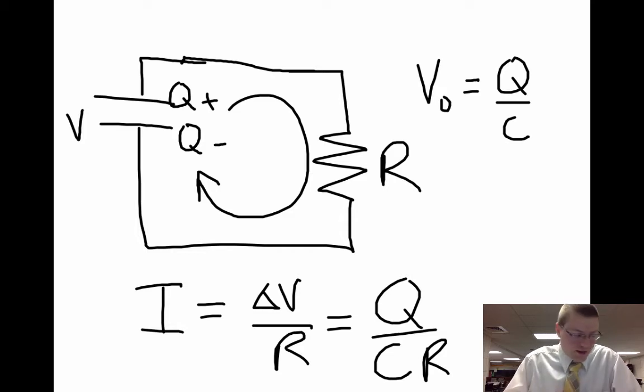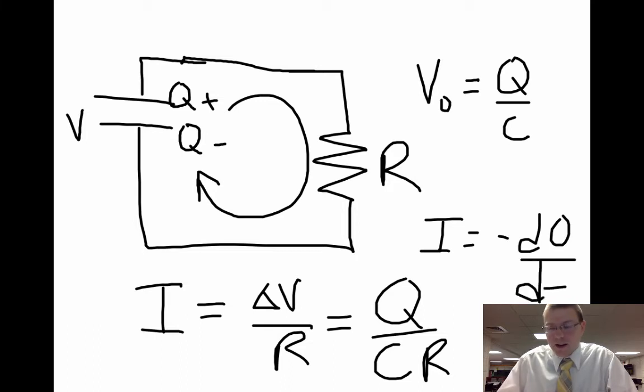However, the current is going to decrease as the voltage decreases, so the amount of charge that's passing through each second can be represented like this, as a negative dQ/dt.